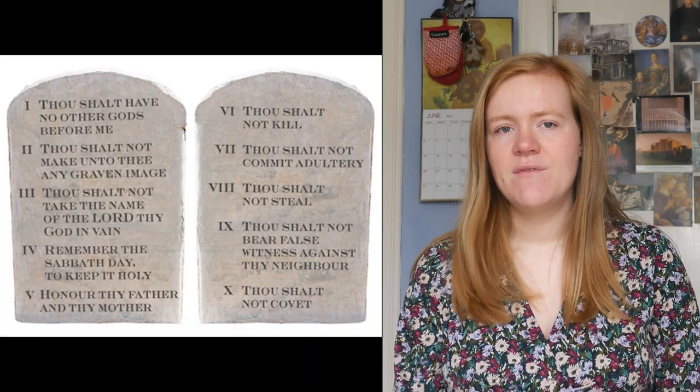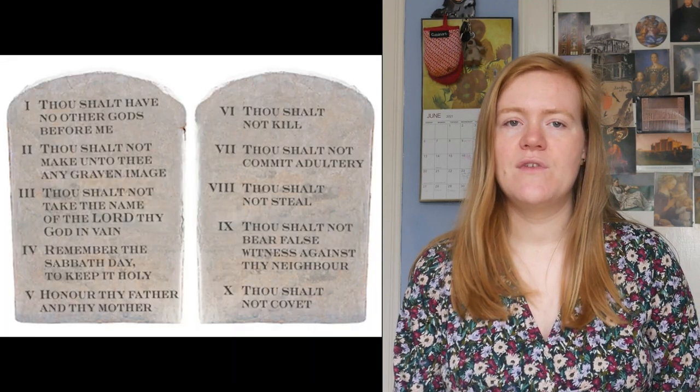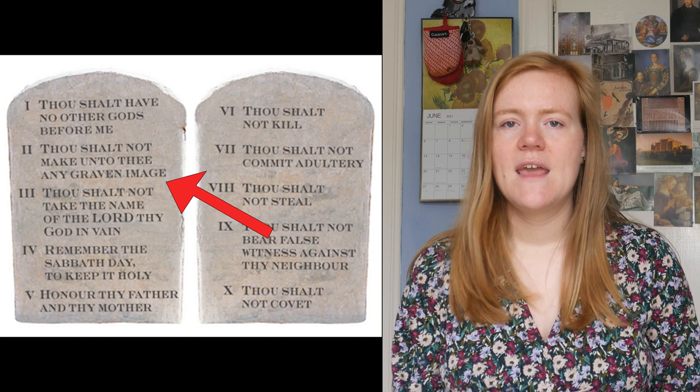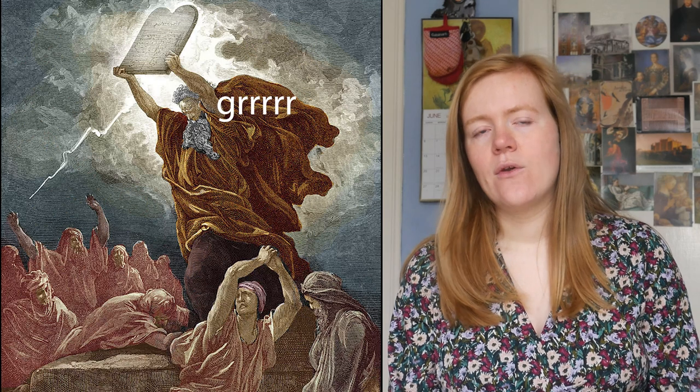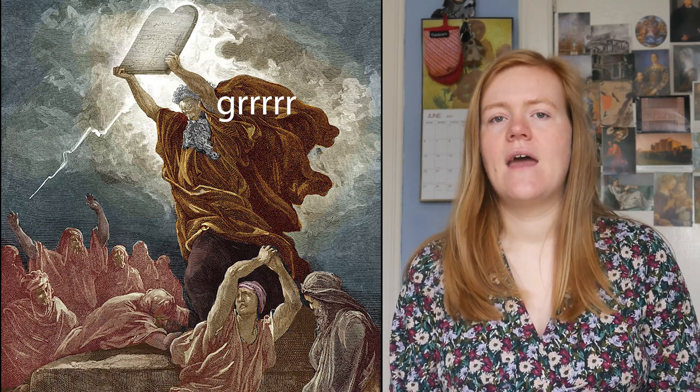When he returns, he finds the Israelites have built a golden calf to worship and make sacrifices to. This behaviour is thought to be copying the Egyptians, who liked to worship pagan or false idols. One of the ten commandments Moses received is 'thou shalt not make any graven images.' So when Moses saw the Israelites worshipping this idol and betraying the one and only God who had just delivered them from slavery, he gets really angry, throws down the tablets and breaks them.